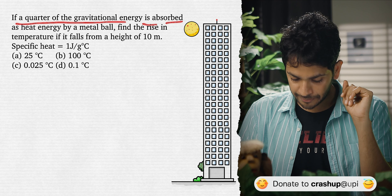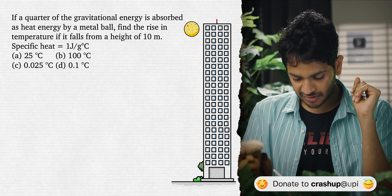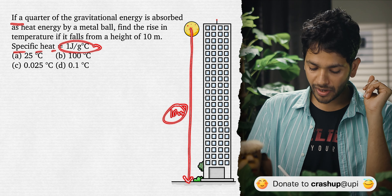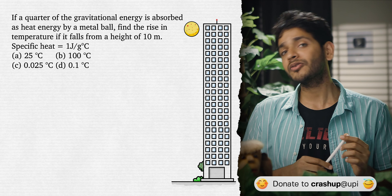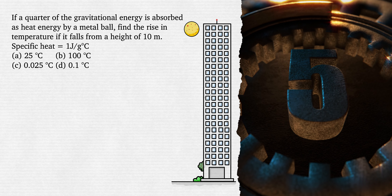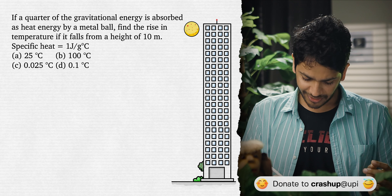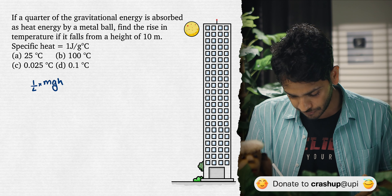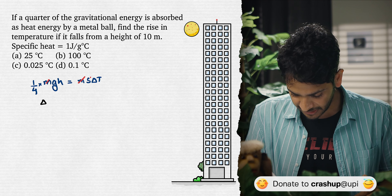Next problem: if a quarter of the gravitational energy is absorbed as heat energy by a metal ball, find the rise in temperature if it falls from a height of 10 meter, given specific heat. The equation is: one-fourth of MGH = MS∆T. Mass cancels with mass.